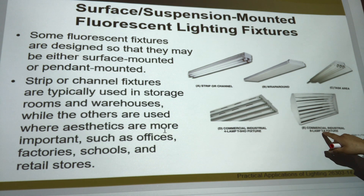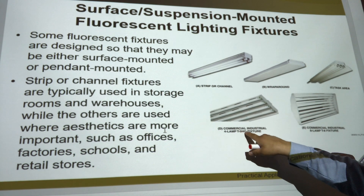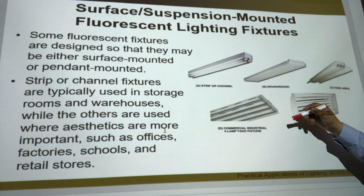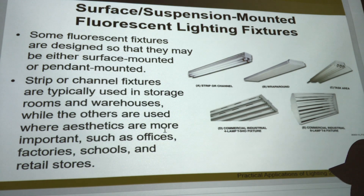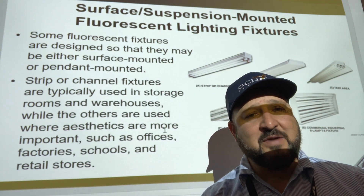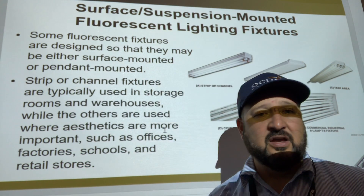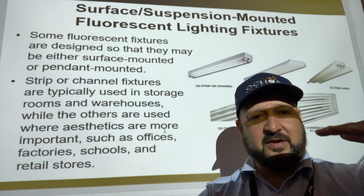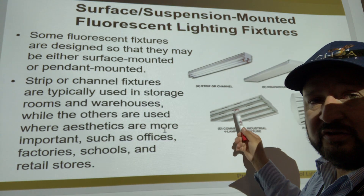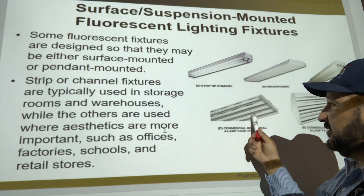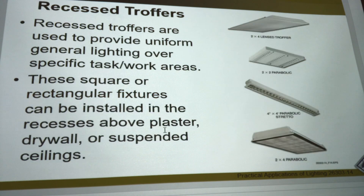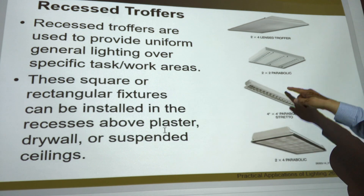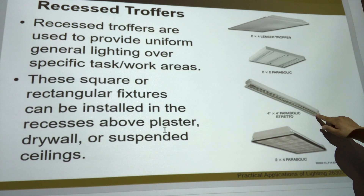Here's an eight-lamp T8 fixture and a T5 fixture. These will tell you if they're high bay or low bay. Low bay lights are for ceilings around 12 to 15 feet. High bay lights are for ceilings around 20 to 25 feet. They put these in gymnasiums and schools now because they're more efficient.